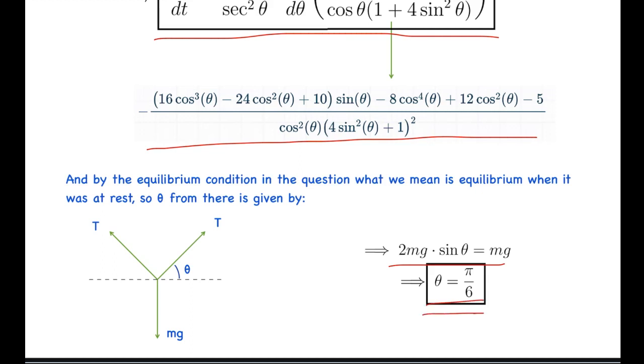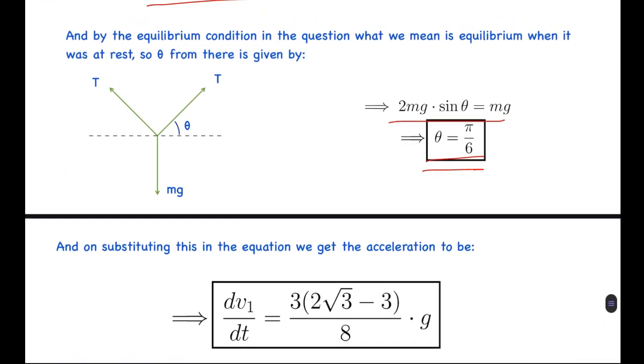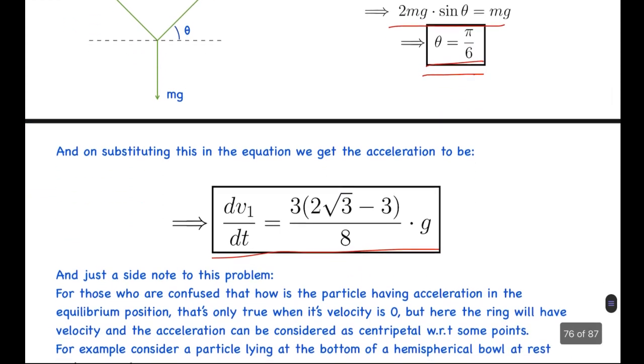So substituting this in the above expression, we finally get the value of dv₁/dt = 3(2√3 - 3)/8 × g. So this is the final acceleration and final answer.